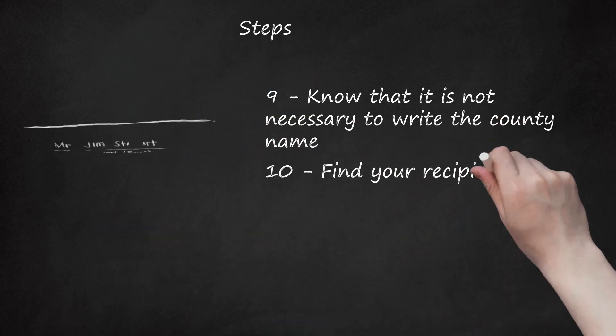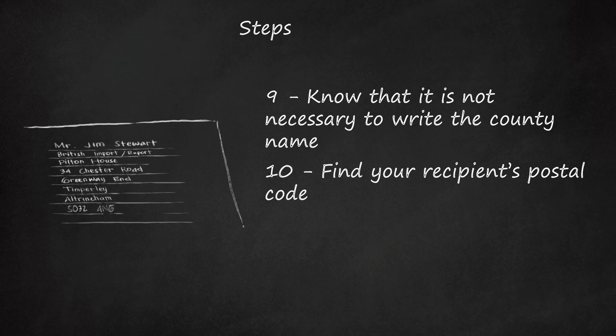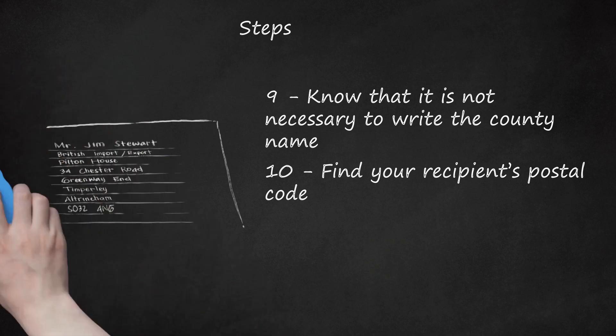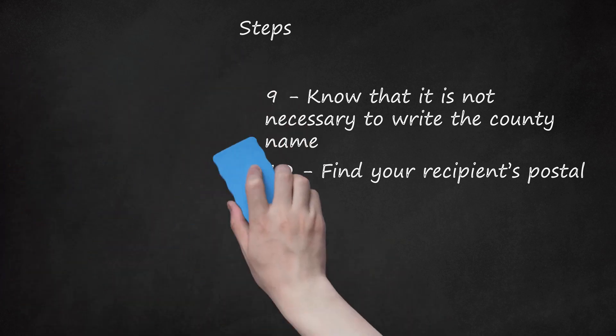Step 10. Find your recipient's postal code. Unlike many other countries, England uses a postal code that is made up of both numbers and letters. You can run a search for your recipient's postal code online by using a postal code finder. For example: Mr. Jim Stewart, British Imports, Exports, Pilton House, 34 Chester Road, Greenway End, Timperley, Altringham, SO32 4NG.